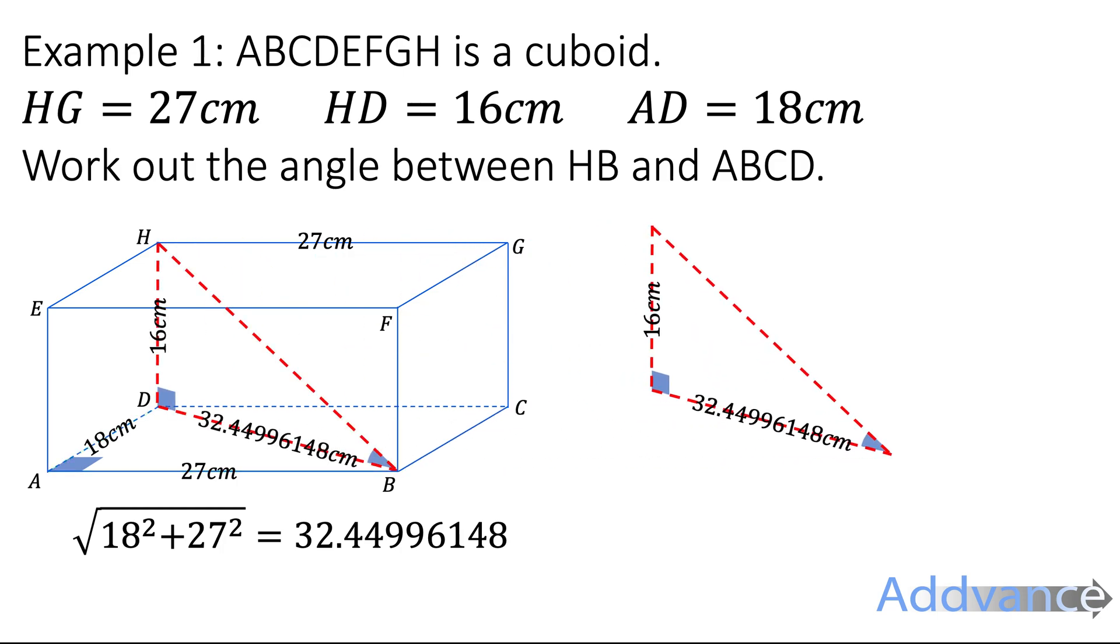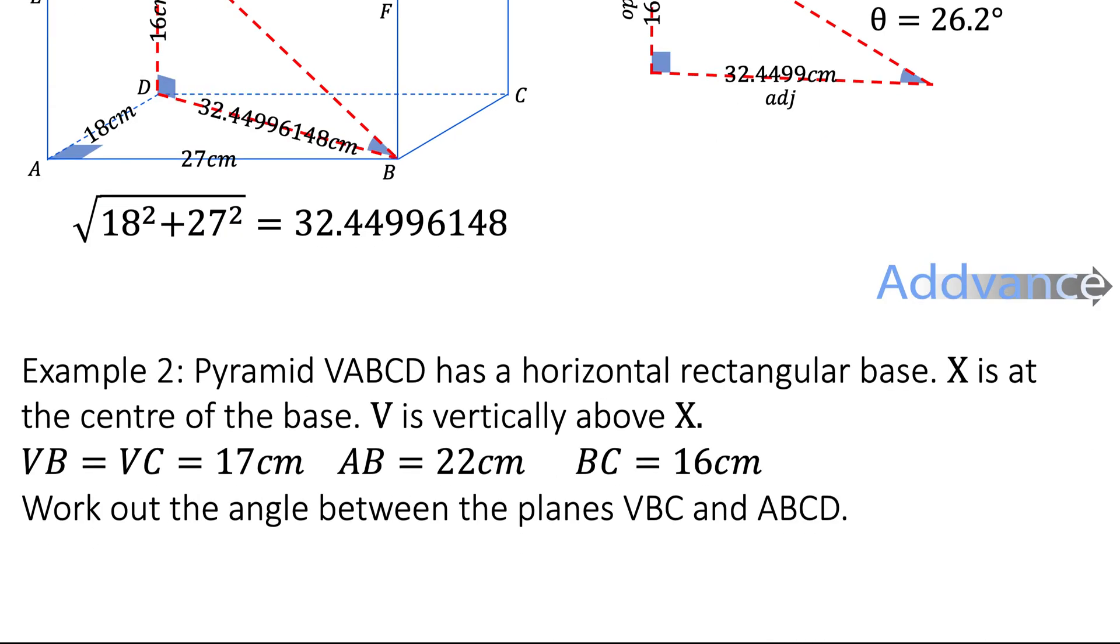Now we've got this triangle here, and we can draw it separately over here. And let's draw it flat so we can see exactly how it is. Always a good idea when you're doing these questions is to copy out the triangle as a flat triangle. That makes it easier to do 2D trigonometry on. So we label the sides opposite and adjacent. And you should know that to work out the angle from opposite and adjacent, you use inverse tan. Substitute the numbers in like that. And we tap that into the calculator, we get 26.2 degrees, and that is the correct answer.